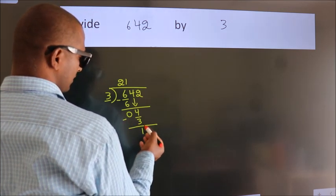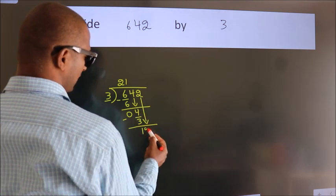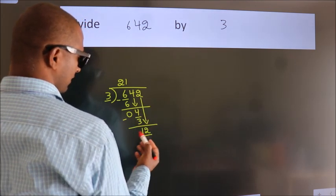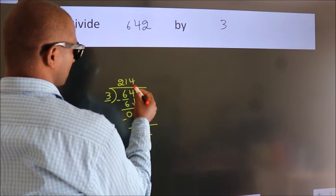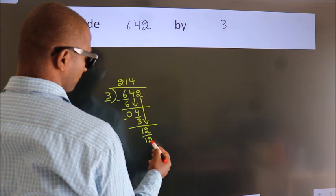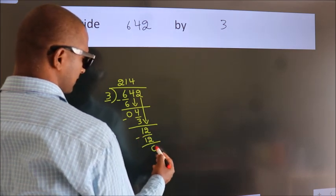After this, bring down the beside number. So 2 down. So 12. When do we get 12 in the 3 table? 3 times 4 equals 12. Now, we subtract. We get 0.